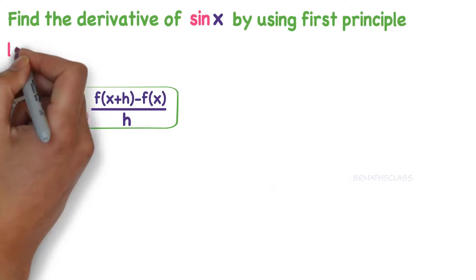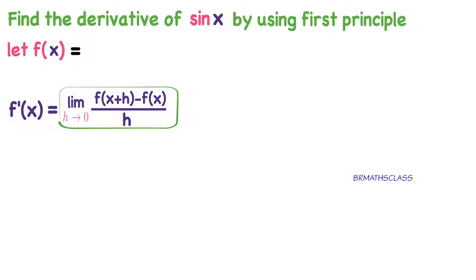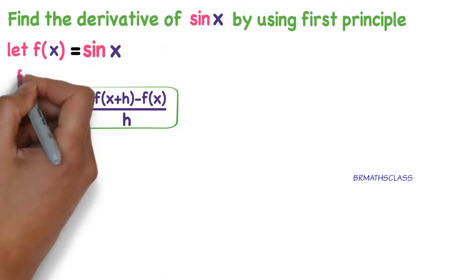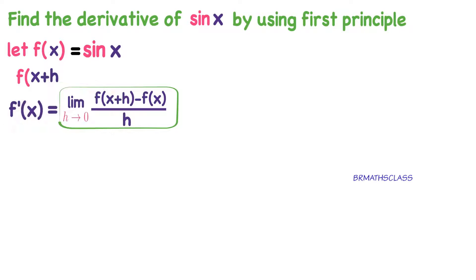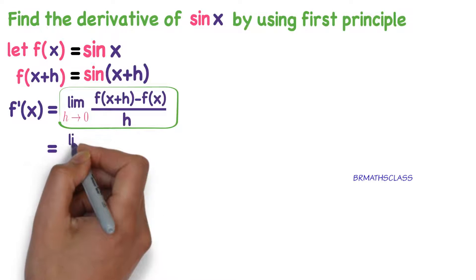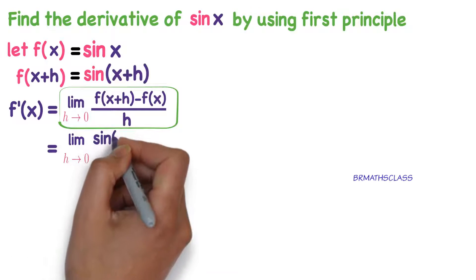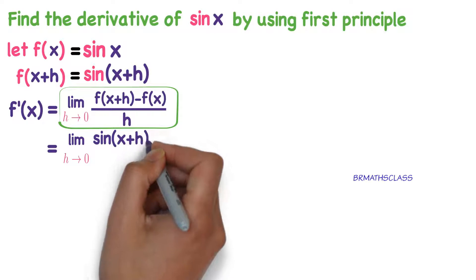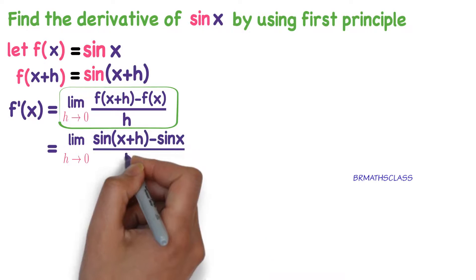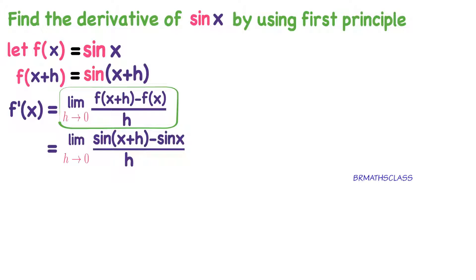Now, whichever function's derivative you want to find, you take that function as f(x). So what is f(x)? f(x) is sine x. Now what is f(x+h)? x is replaced with x+h, so f(x+h) is sine(x+h). Now: limit h tends to 0 of [sine(x+h) minus sine x] divided by h.